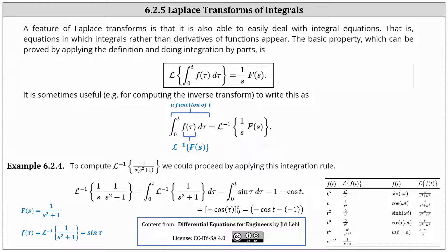For our first example, we'll use this second equation to determine an inverse Laplace transform. We're asked to compute the inverse Laplace transform of one divided by the product of s and the quantity s squared plus one. We begin by writing this as the inverse Laplace transform of one divided by s times one divided by the quantity s squared plus one.